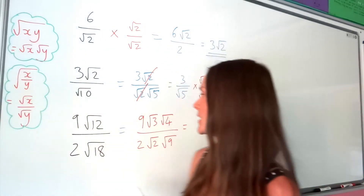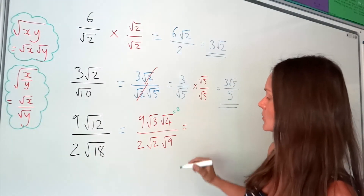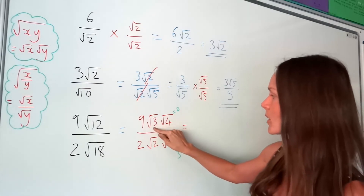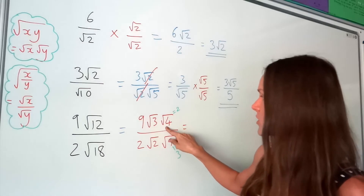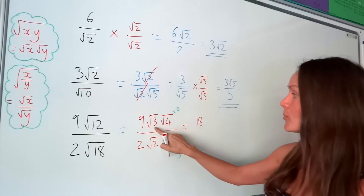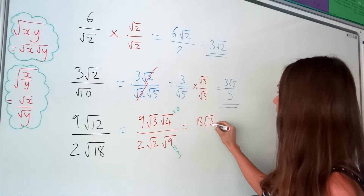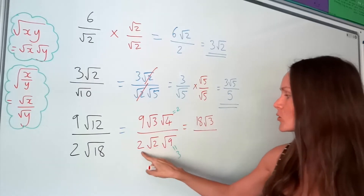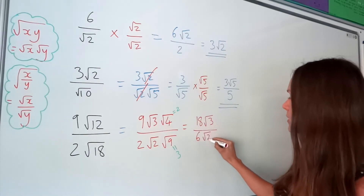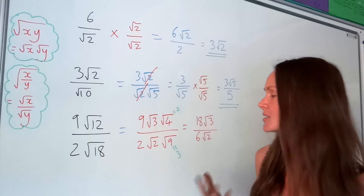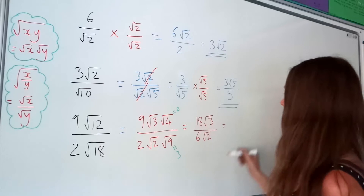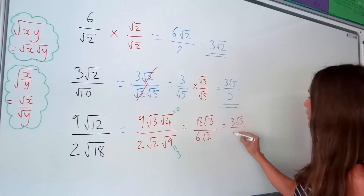The square root of 4 is 2, and the square root of 9 is 3. Multiplying everything together: on the numerator we get 9 multiplied by 2, which is 18, and we still have root 3 left over. On the denominator, we get 2 multiplied by 3, which is 6, and we still have root 2 left over. 18 divided by 6 is 3, so we're left with 3√3 over √2.